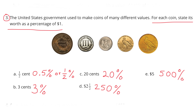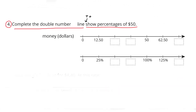D. A two-and-a-half dollar coin would be worth 250% of $1.00. E. A five-dollar coin would be worth 500% of $1.00.